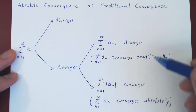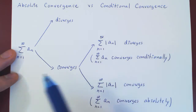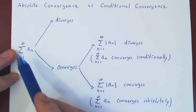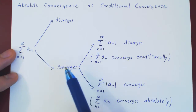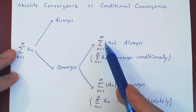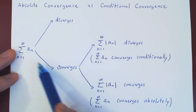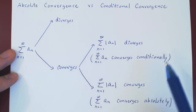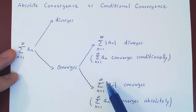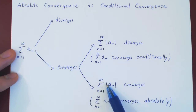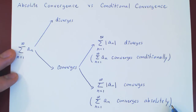So these are the two types of convergence. To summarize: if the series diverges, end of story. If the series converges, we look at the new series of the absolute value of the terms. If this new series diverges but the initial series converges, we have conditional convergence. If both the series and the series of its absolute values converge, we have absolute convergence.